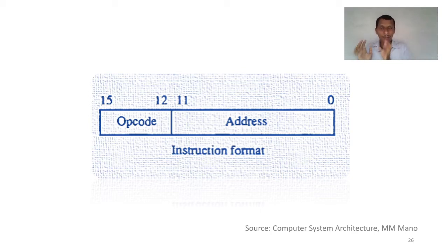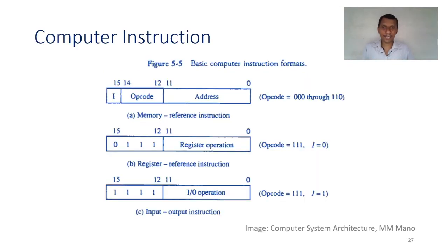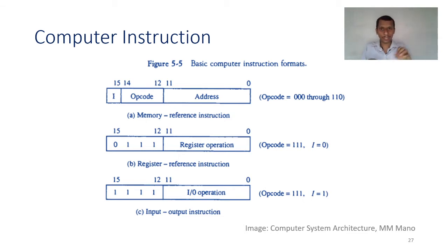What is the operation code? It specifies which operation you want to execute. The operand part specifies where the value is. This format can be customized into further subdivisions. For instance, you can have different formats — for example, memory reference instructions. For some instructions you have to load data from the memory or store data to the memory. These are the memory instructions.